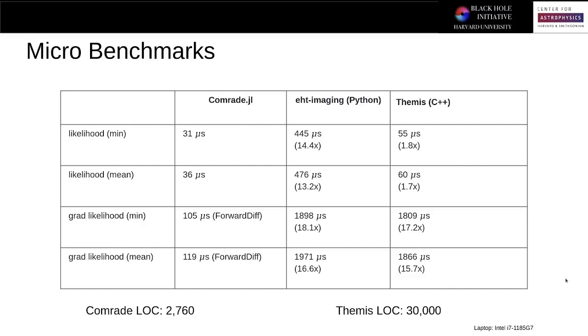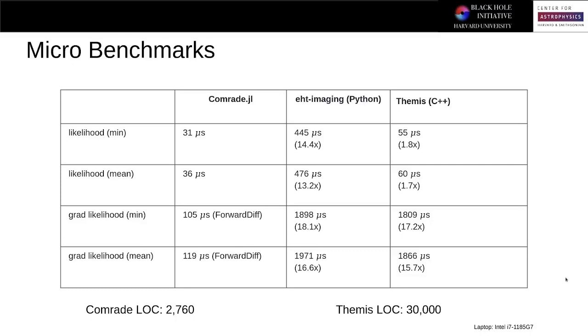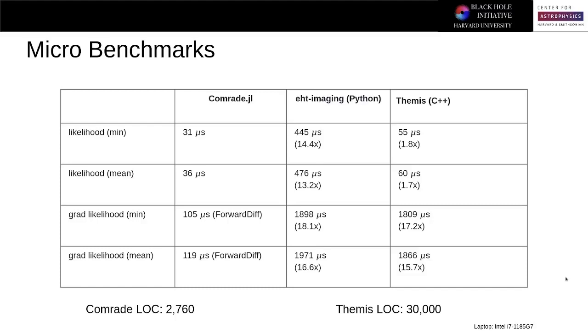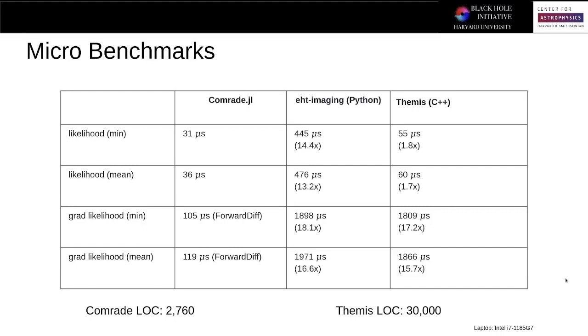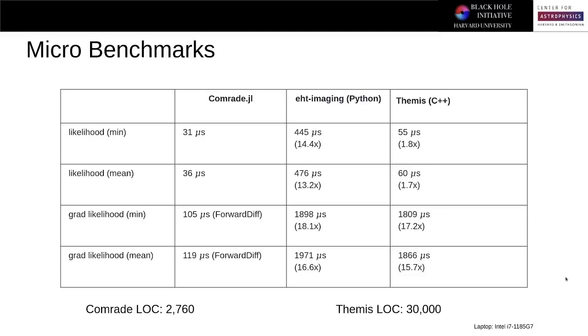However, more interestingly and surprising to us was the fact that Comrade was actually almost a factor of two faster than Themis when evaluating the likelihood and was almost 20 times faster when evaluating the gradient of the likelihood. Now, this gradient was to be expected because Themis doesn't actually have a native auto-differentiation library in it and relies on a slow finite differentiation scheme. Even more impressive is that Comrade's about an order of magnitude less code than Themis and has a comparable feature set showing the expressive nature of Julia.